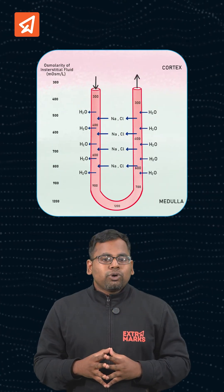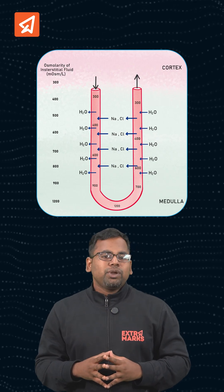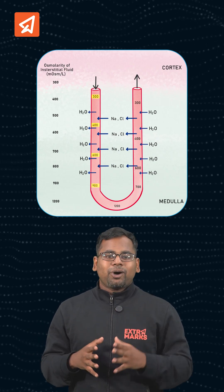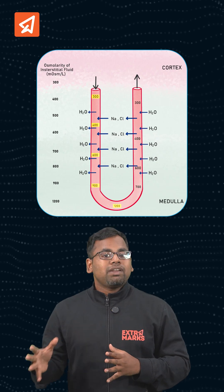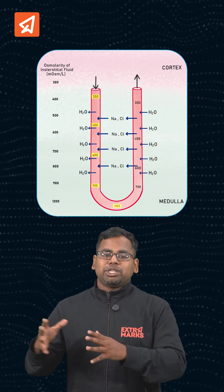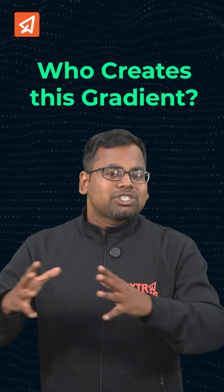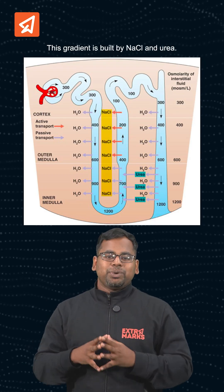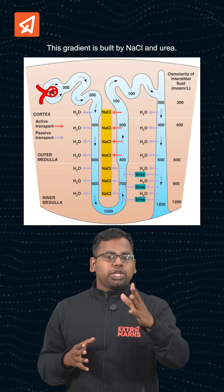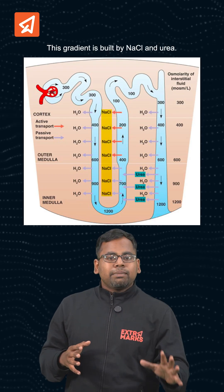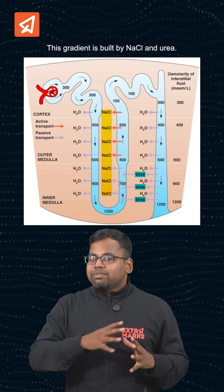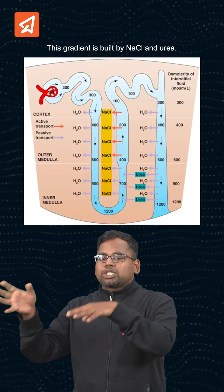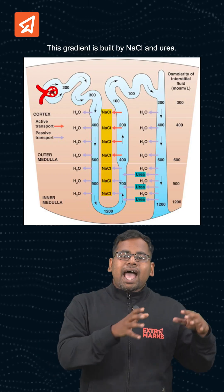This opposite flow helps create a medullary osmotic gradient, ranging from 300 mOsm/L in the cortex to 1200 mOsm/L in the inner medulla. This gradient is built by sodium chloride and urea. Sodium chloride leaves the ascending limb of the loop of Henle, enters the vasa recta, and comes back. Urea cycles from the collecting duct to the loop of Henle and back again.